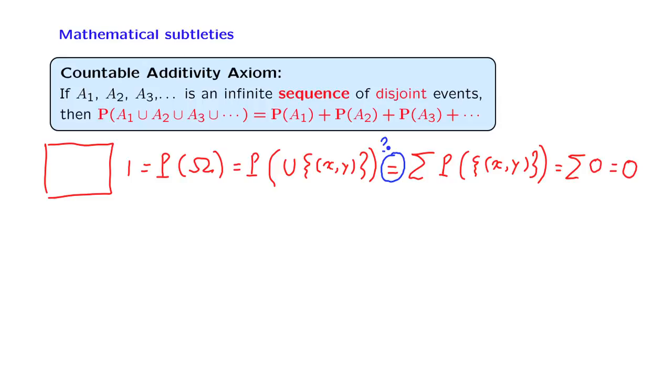You might argue that the unit square is the union of disjoint single element sets, which is the case that we have in additivity axioms. But the additivity axiom only applies when we have a sequence of events.